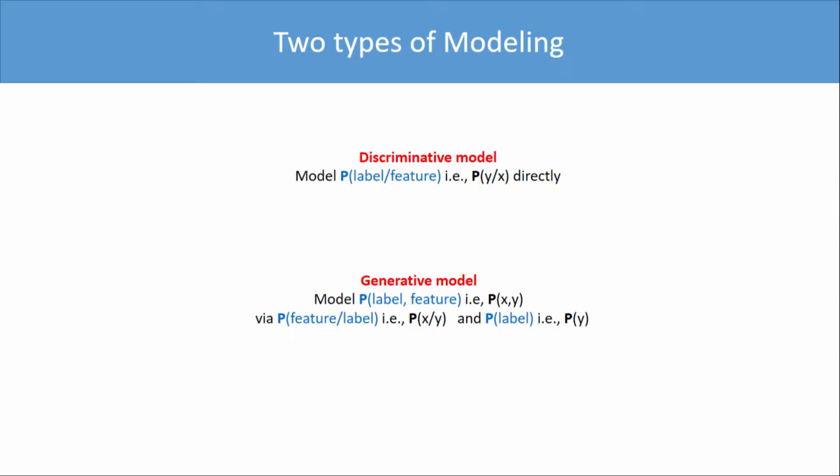Discriminative models try to model p(y|x) — the probability of label given feature — directly. You assume a certain model for p(y|x) and try to find the best model that fits the data. The generative model, on the other hand, models the joint distribution — not just the conditional, but the joint distribution itself. You model p(x|y), the class conditional probabilities — given that it is class 0, what is the chance that I see this feature? You also model p(y). If you have modeled p(x|y) and p(y), that is equivalent to modeling p(x, y), because it's just a product of these two.